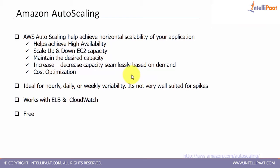Auto Scaling is a perfect case for high availability. It can scale up and scale down EC2 capacity automatically based on conditions defined, and you can manage your desired capacity.